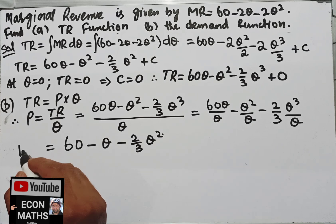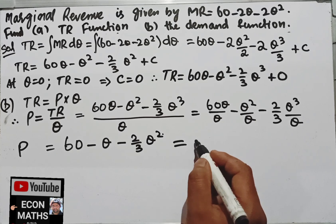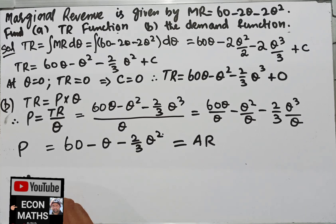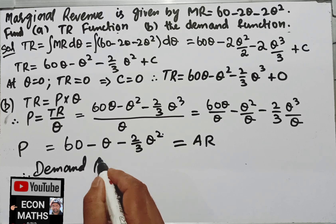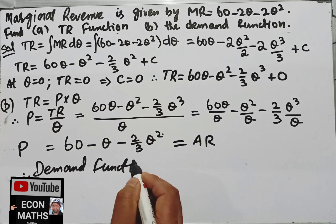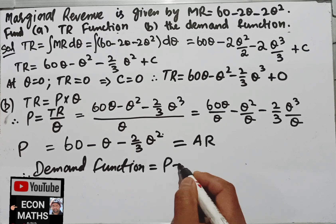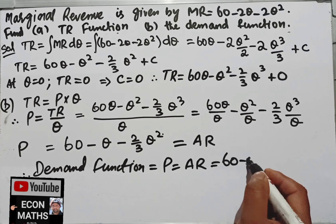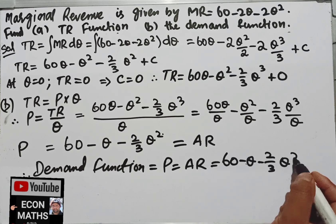Therefore, the demand function, which is also the average revenue function, is equal to price = 60 minus Q minus 2/3 Q squared.